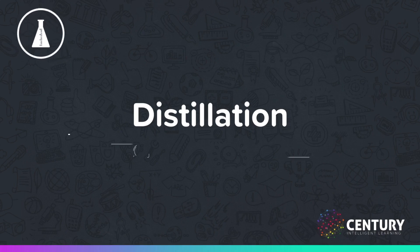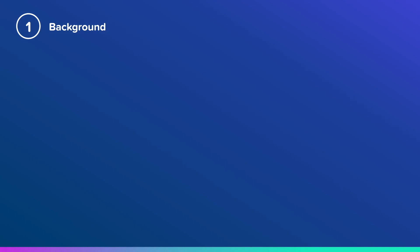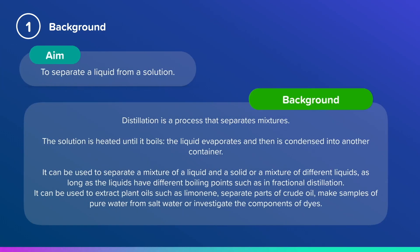In this nugget, we're going to learn how to carry out a distillation. Distillation separates a liquid from a solution. It's a process to separate mixtures. The solution is heated until it boils, the liquid evaporates, and then is condensed into another container.